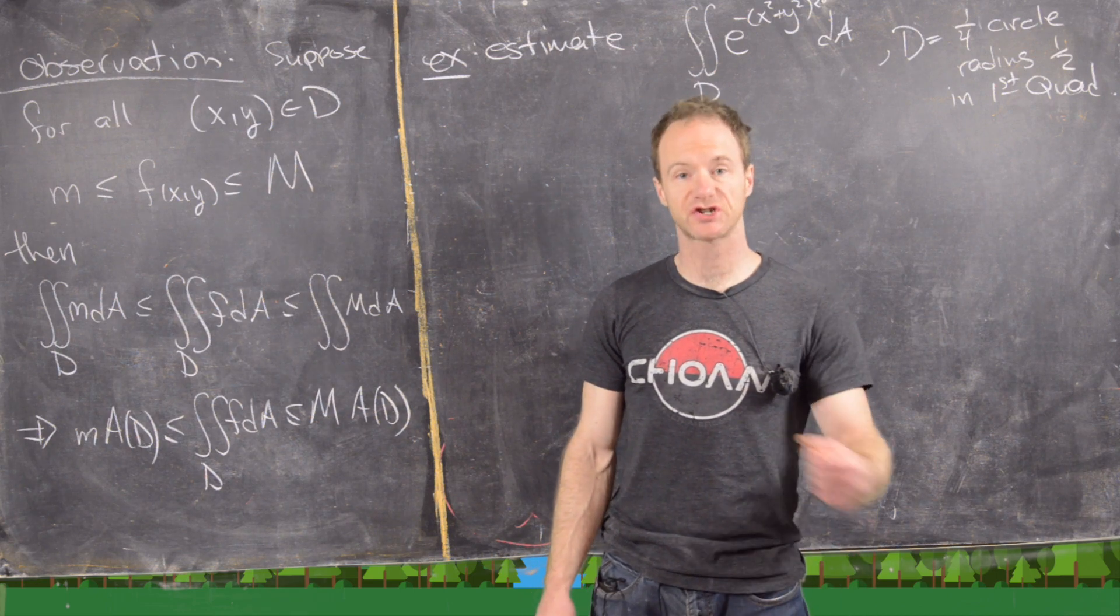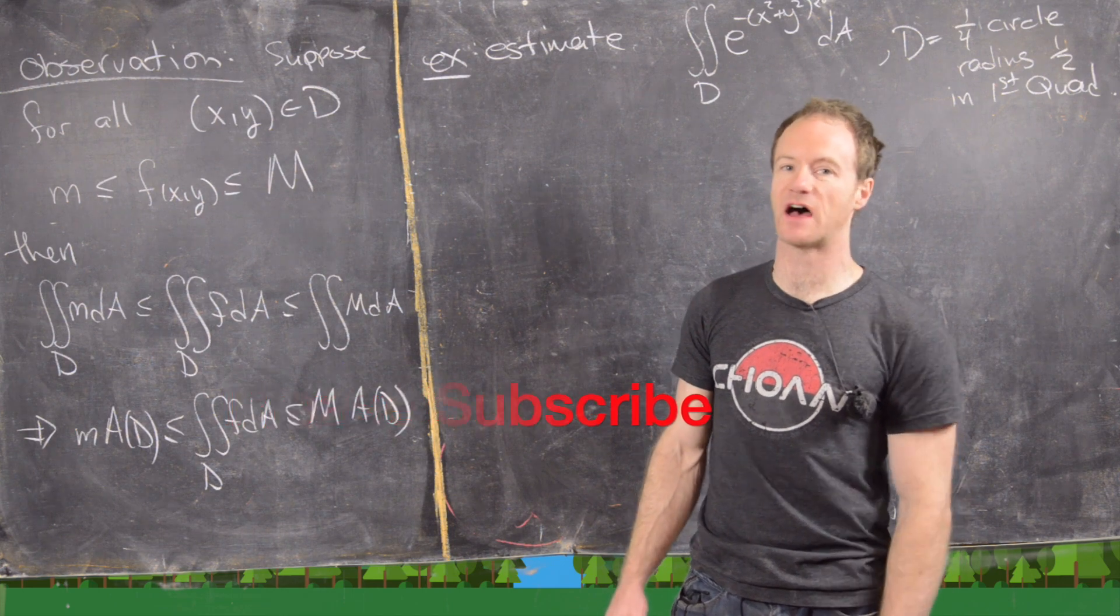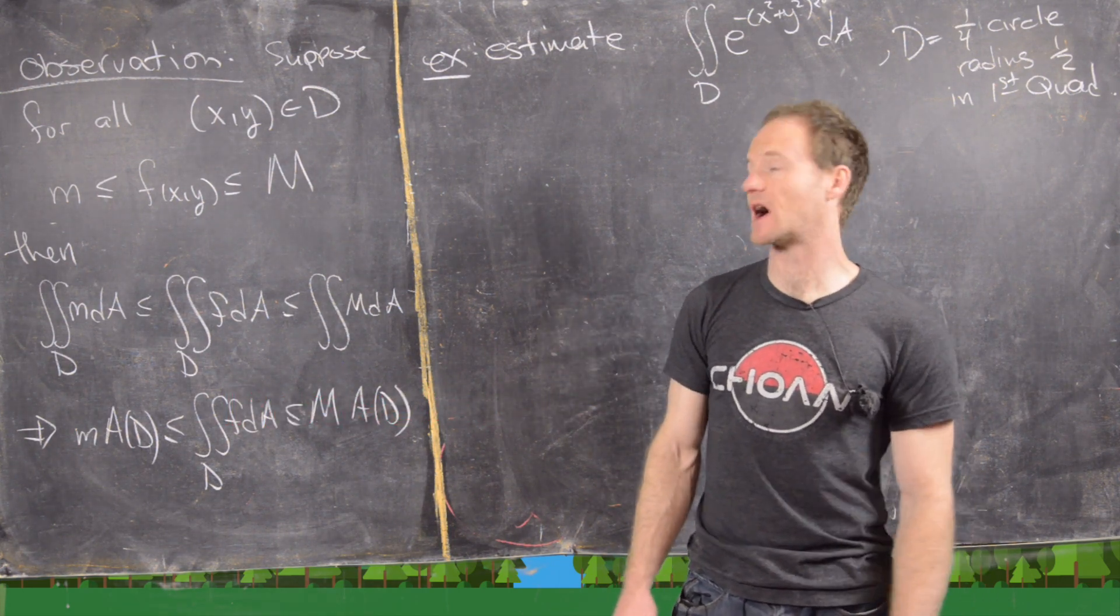Here we want to use the extreme maximum and minimum of a function in order to estimate the value of its double integral. So it's going to follow from this observation.